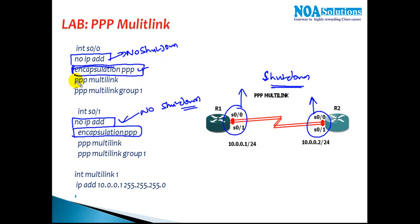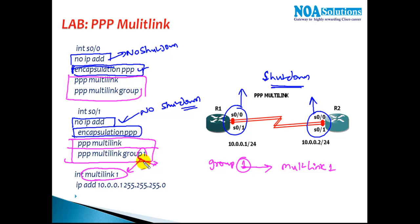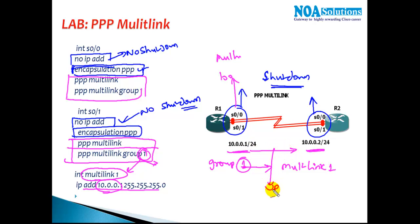There are only two commands we need to configure on the interface. The first command is to enable PPP multi-link, and the second command is to assign a group number — group 1. This group number is actually the name of the interface that's going to create multi-link 1. Based on that, we assign the IP address on the multi-link interface, not on the physical interface. So we say interface multi-link 1, assign IP 10.0.0.1 on one side and 10.0.0.2 on the other side.